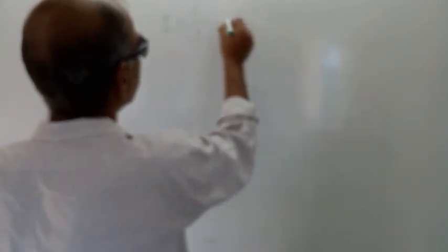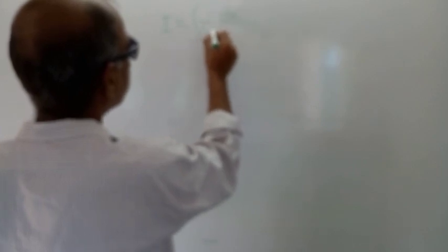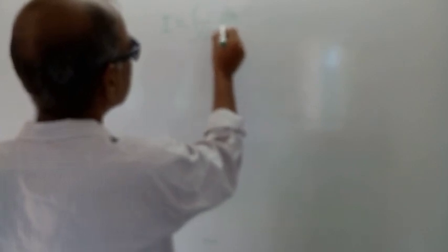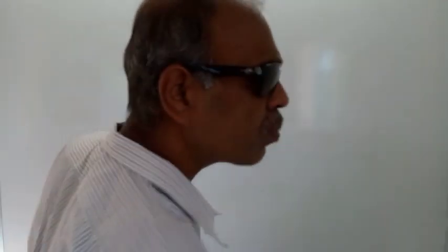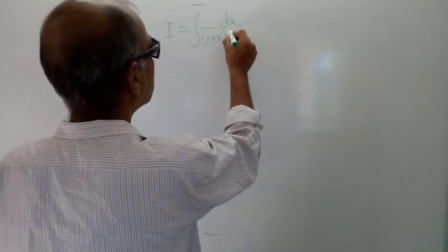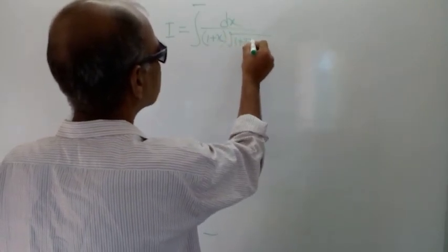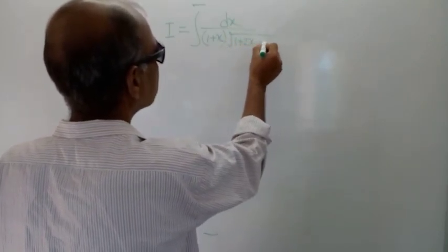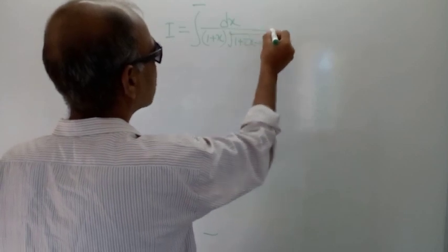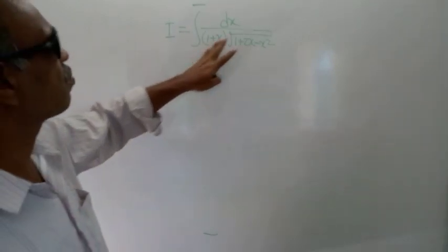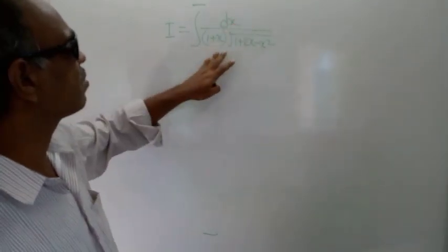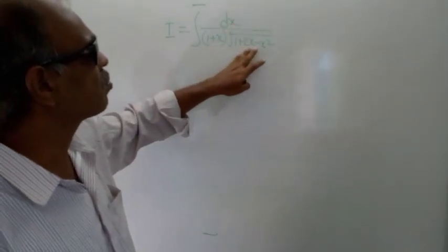I is equal to the integration of dx divided by (1 plus x) into root over of (1 plus 2x minus x squared). This is the given problem.